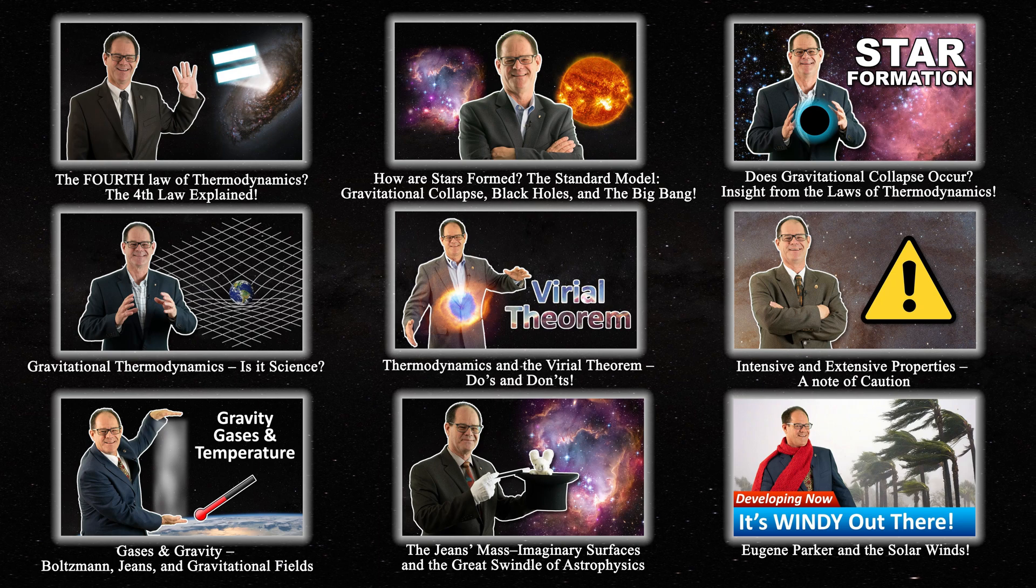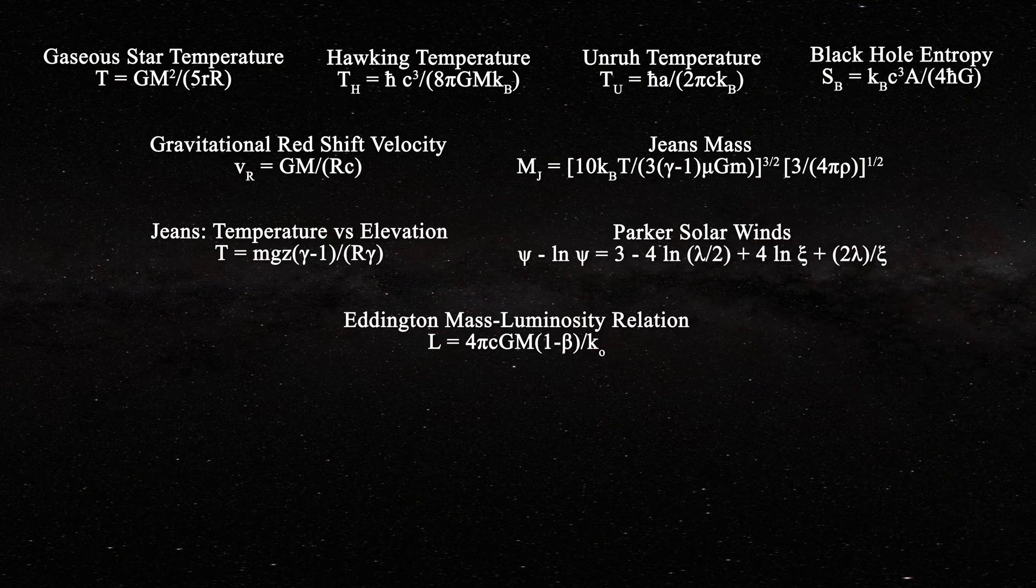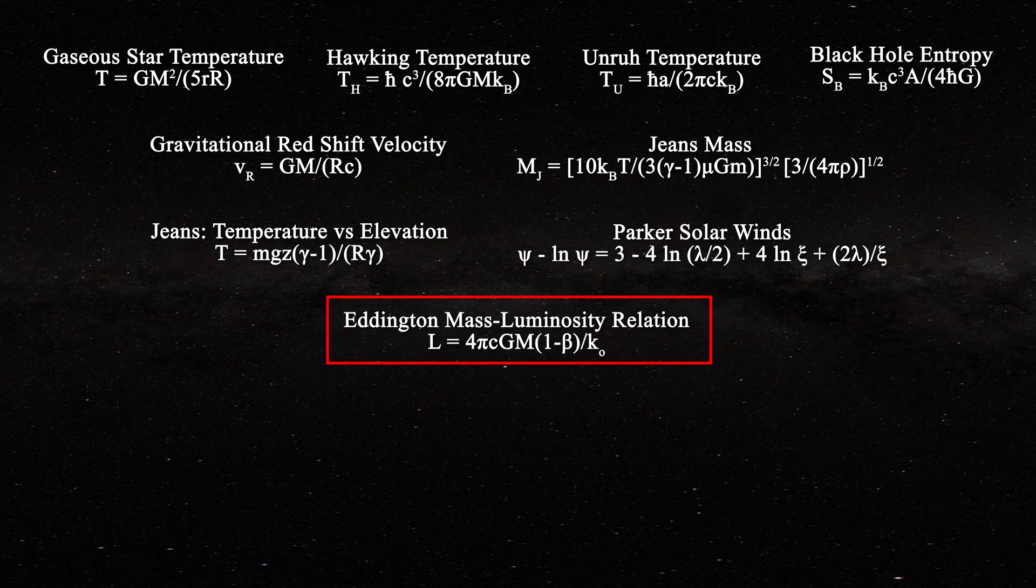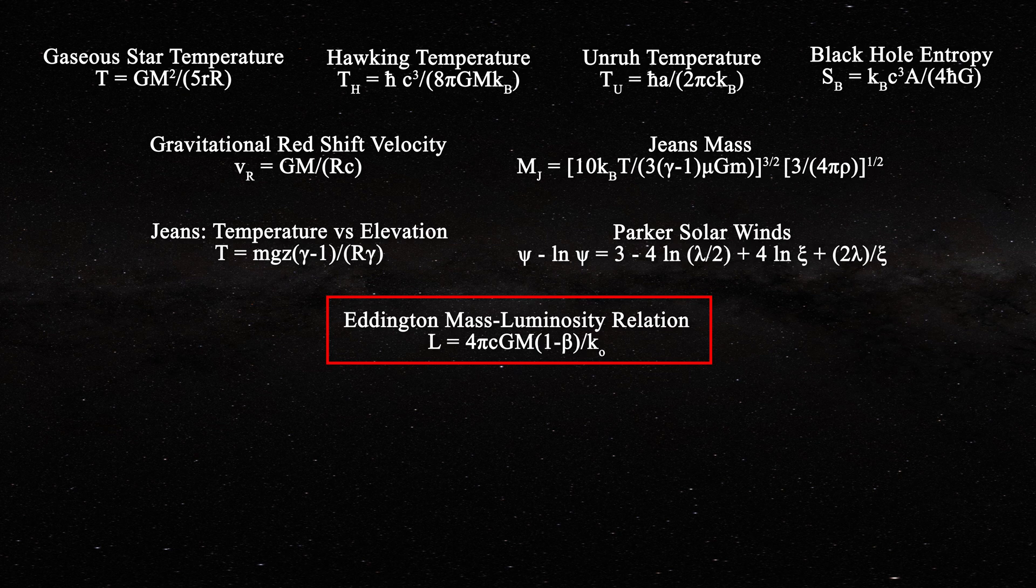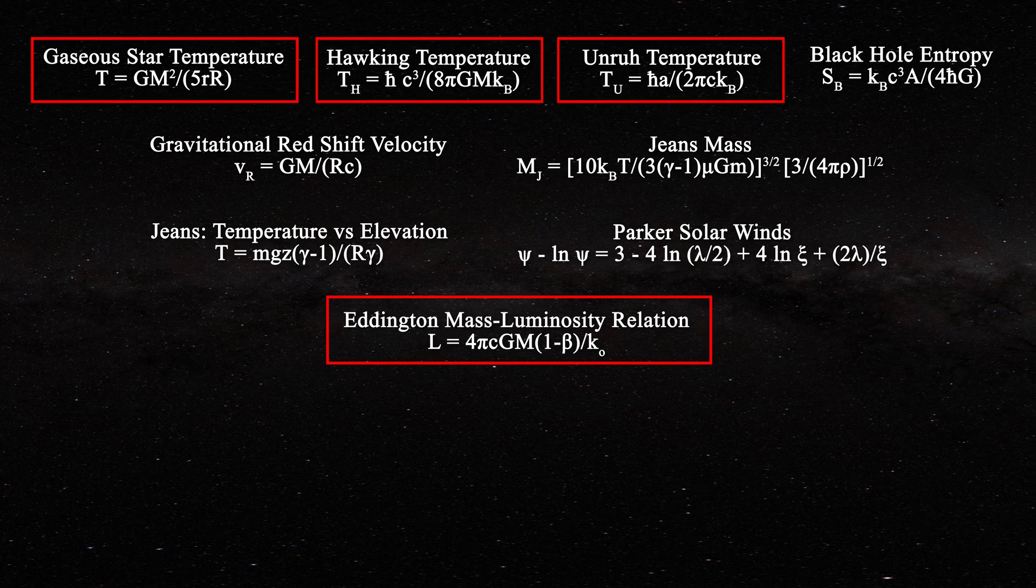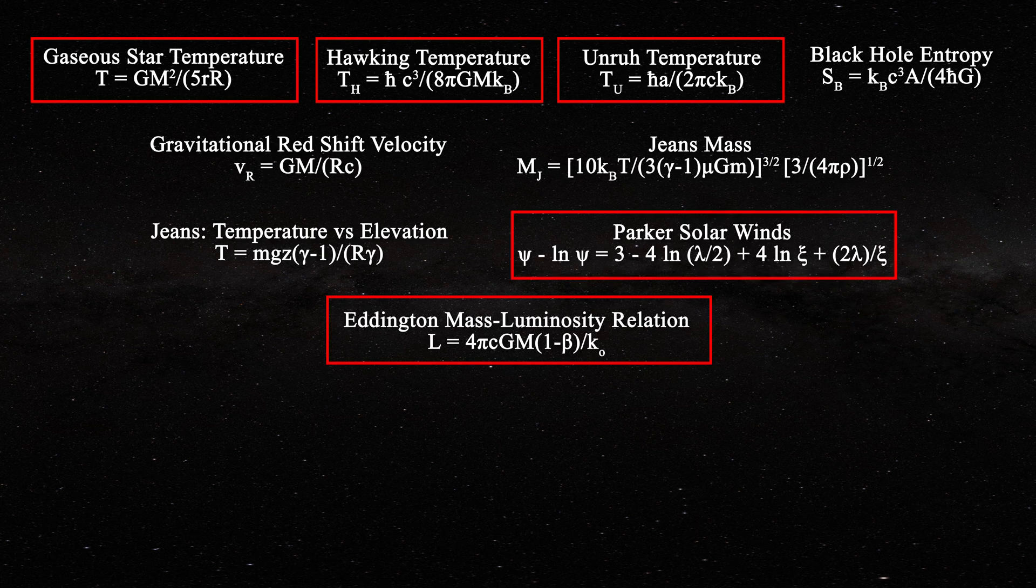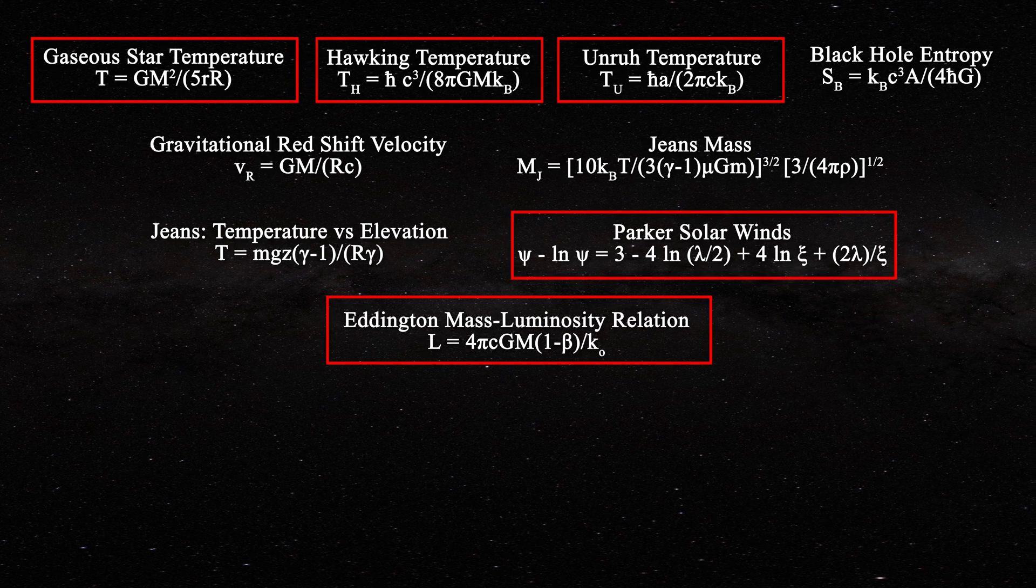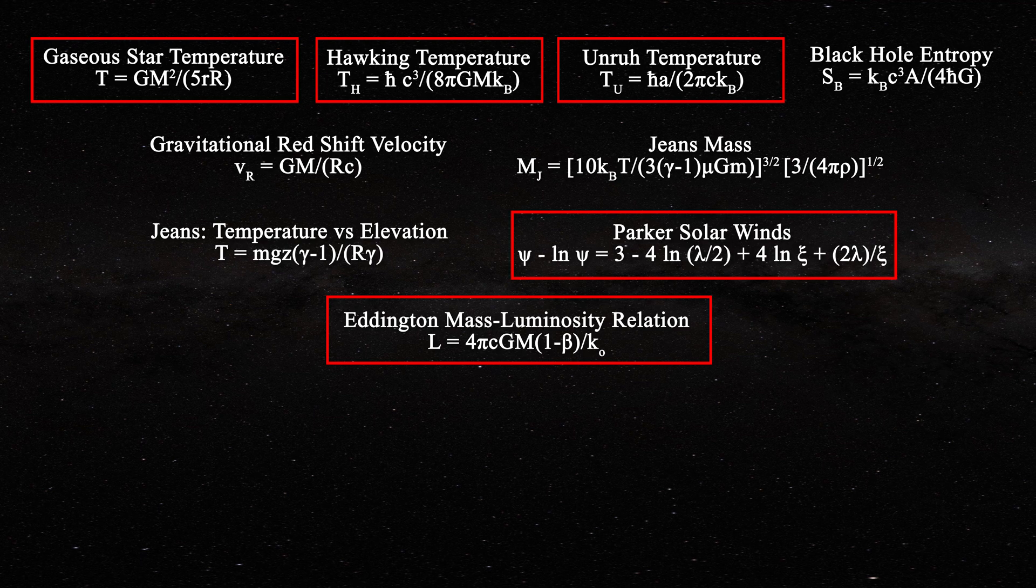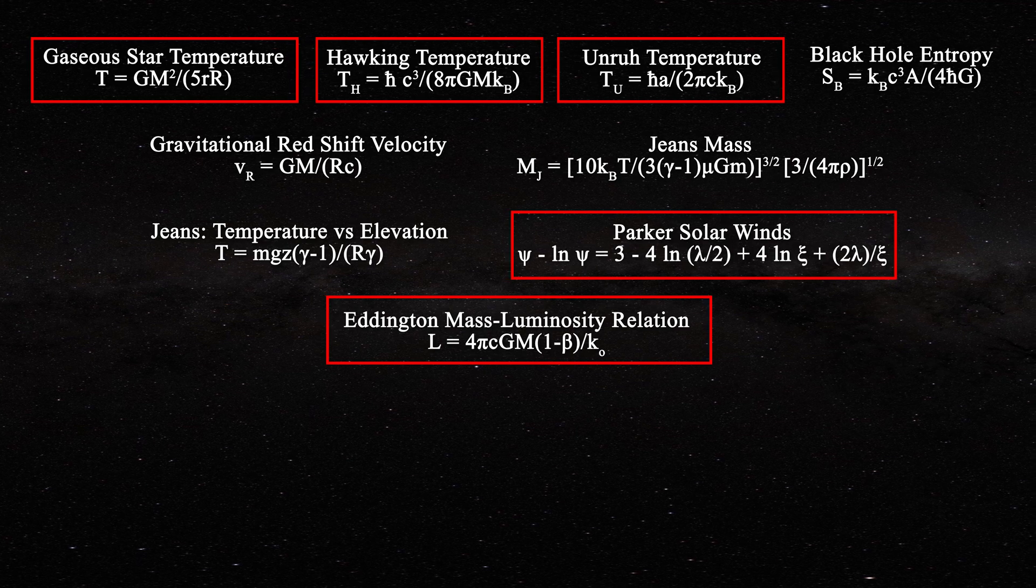If one examines many of the common equations in astrophysics one will find that they violate the laws of thermodynamics including Eddington's mass luminosity expression and the equations for the temperatures of gaseous stars, Hawking and Unruh temperatures, and for the Parker solar winds. In each of these cases, the temperatures obtained are not intensive which is a violation of the zeroth and second law of thermodynamics.